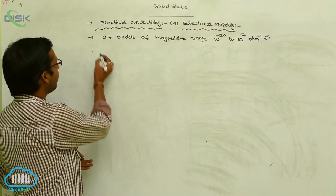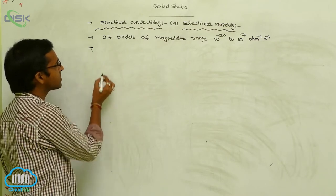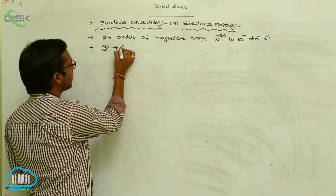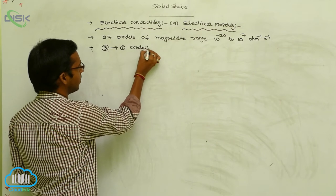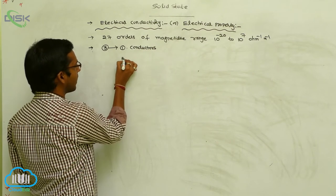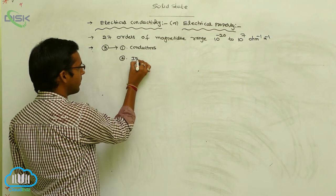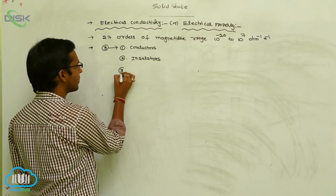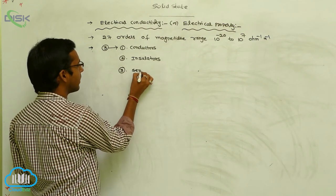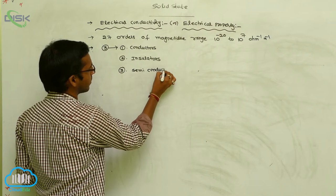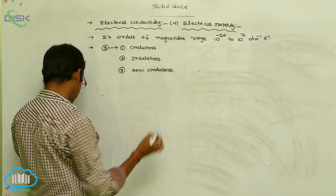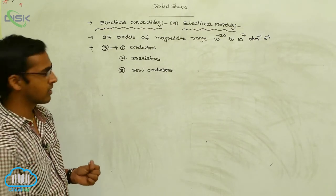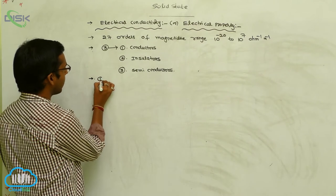Based on conductivity, solid state substances are classified into three types: the first is conductors, the second is insulators, and the third is semiconductors.